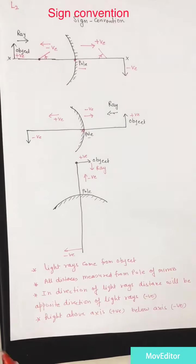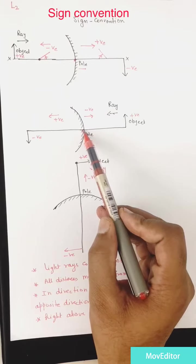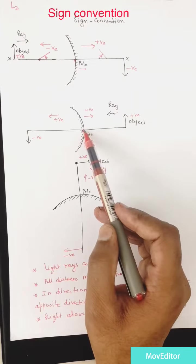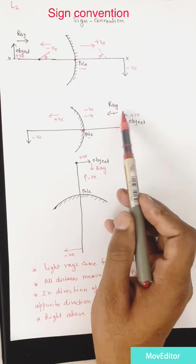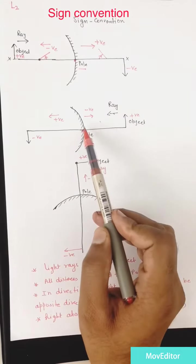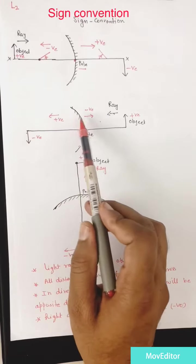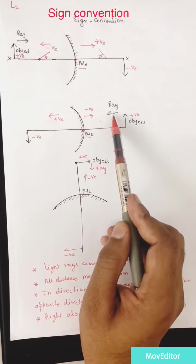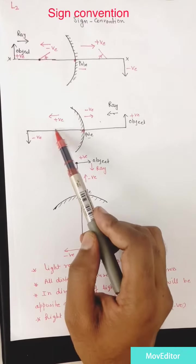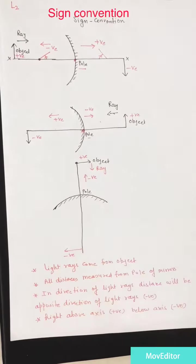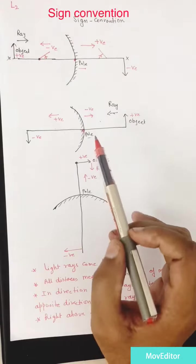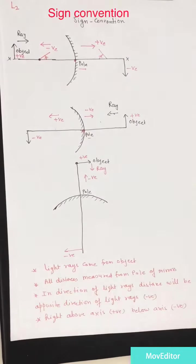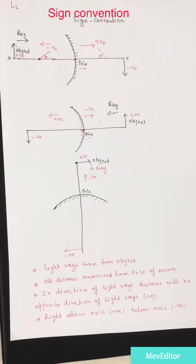In the second diagram, if you want to measure object distance, the light ray comes from the object and you have to move right side, but you are moving opposite to the direction of the light ray, so object distance will be negative. If the image forms at a certain point and you move in the same direction as the light ray to measure it, that image distance will be positive. Height above principal axis is positive, below is negative. It's not about left side being negative and right side being positive — it depends on the direction relative to the light ray.